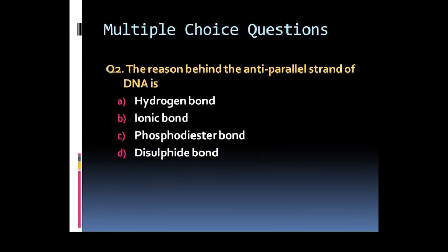Question 2: The reason behind the antiparallel strand of DNA is: Option A: Hydrogen bond. Option B: Ionic bond. Option C: Phosphodiester bond. Or Option D: Disulfide bond.